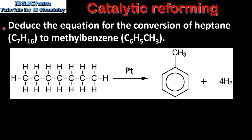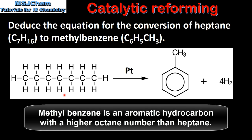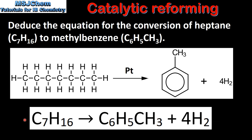Next we look at one more example: deduce the equation for the conversion of heptane to methyl benzene. Here we have the structural formulas for heptane and methyl benzene. In the reaction, heptane is converted into methyl benzene and hydrogen, and here we have the equation for the reaction.